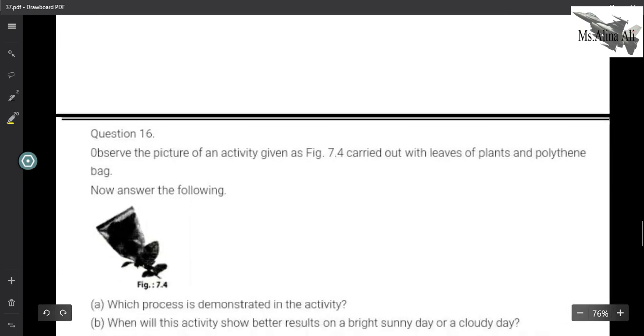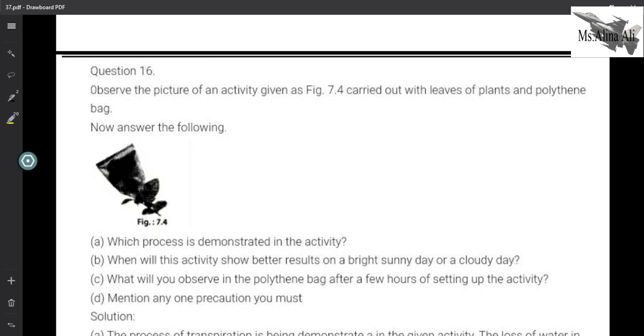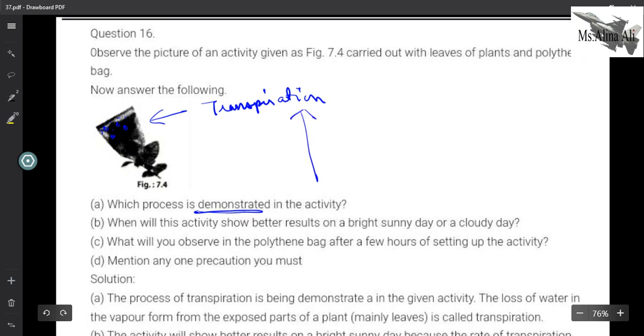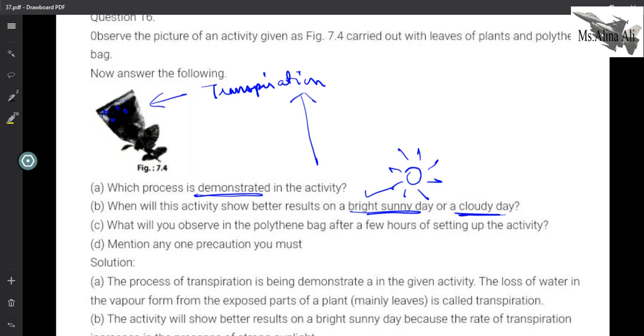Next question is question number 16. Observe the picture of an activity carried out, now answer the following. You remember which activity is transpiration. Which process is demonstrated in this activity? It is transpiration. When will this activity show better results, on a bright sunny day or a cloudy day? Obviously it will work on a bright sunny day because when there is sun, in its presence the water will come out from leaves through transpiration and condensation will happen. So this will basically happen on a bright sunny day more, and the rate or speed is higher in sunny time.